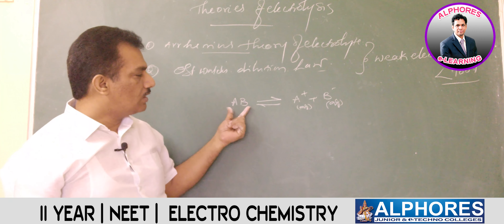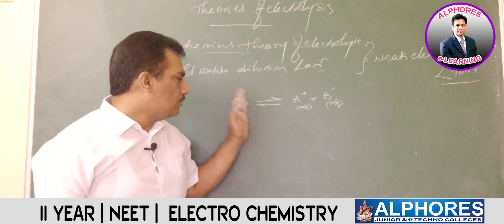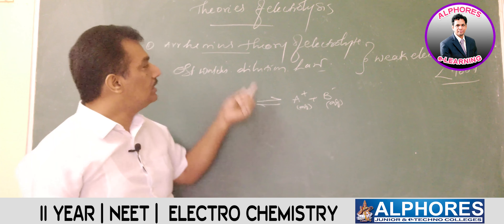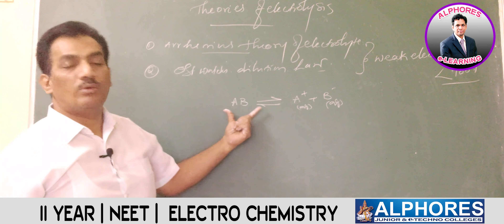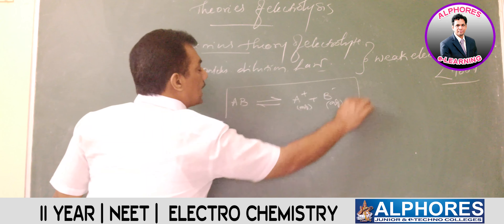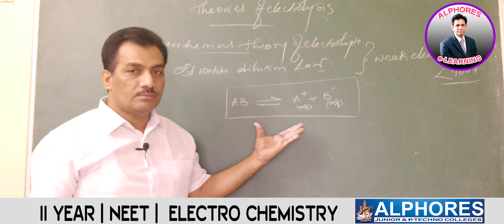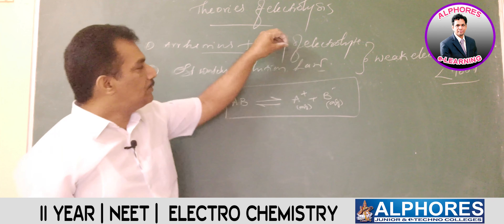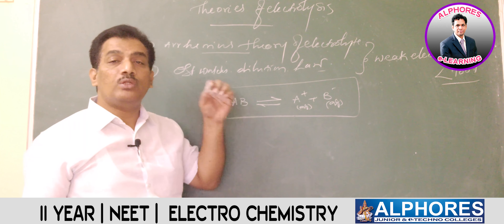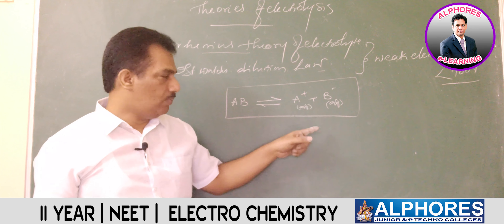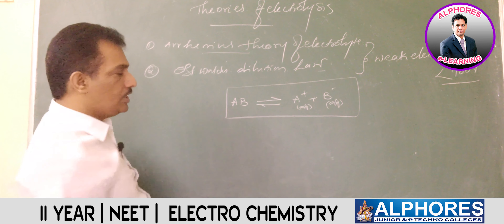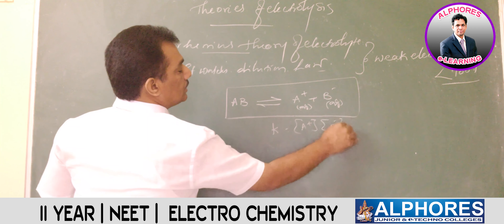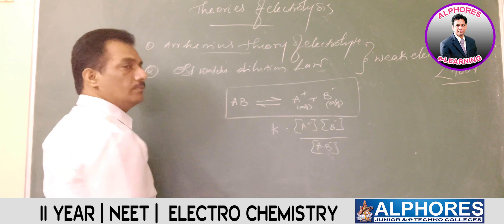For strong electrolytes, there is no equilibrium — all molecules completely ionize. That is why Arrhenius theory and Oswald's dilution law apply only to weak electrolytes. When a weak electrolyte is in aqueous solution, the properties of that electrolyte depend on the ions present in solution. The equilibrium constant K = [A⁺][B⁻]/[AB].